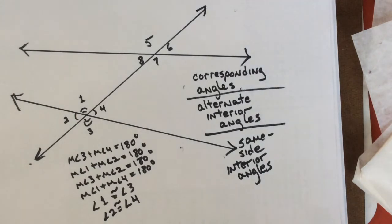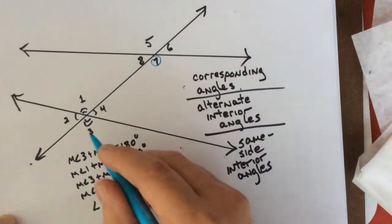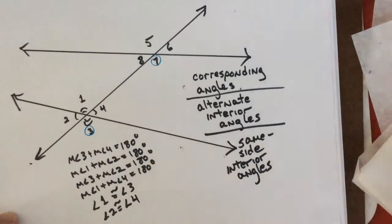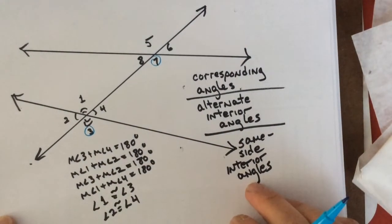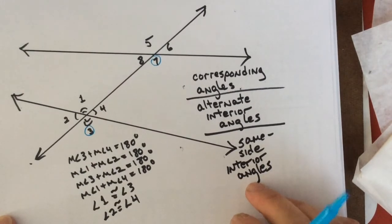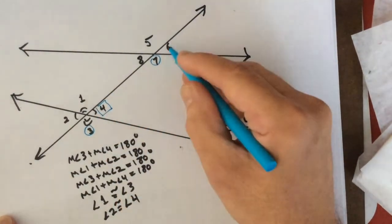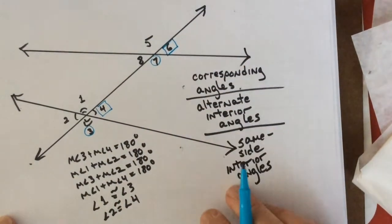And what made you think that? That's exactly right. That's what corresponding means, right? They sort of match up that way. Seven and three are both in the same relative position. What other ones? Six and four, you got it. What else?